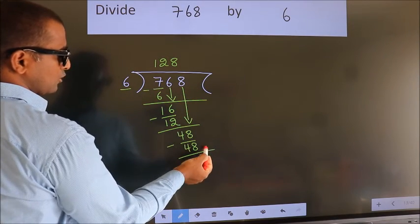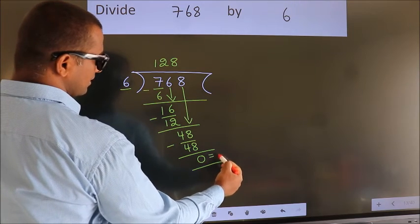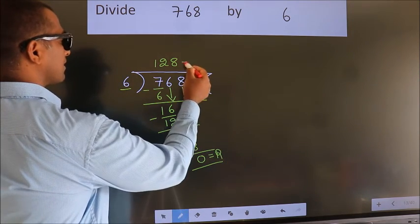No more numbers to bring down, so we stop here. This is our remainder. This is our quotient.